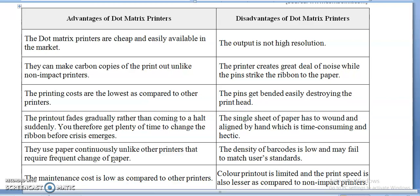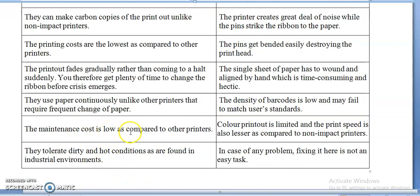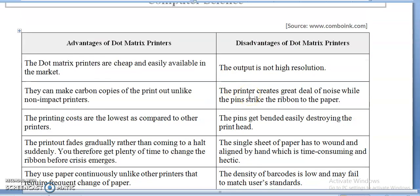You may have seen continuous sheet printing in banks or offices. The maintenance cost of dot matrix printers is also very low compared to other printers, and they can work in very rough conditions. They tolerate dirty and hot conditions found in industrial environments — they do not need a sophisticated environment and can work easily in harsh or filthy areas.